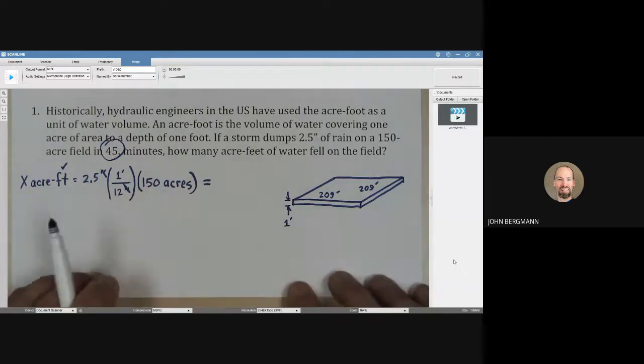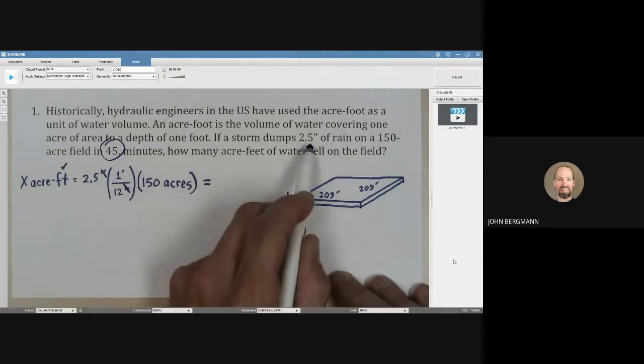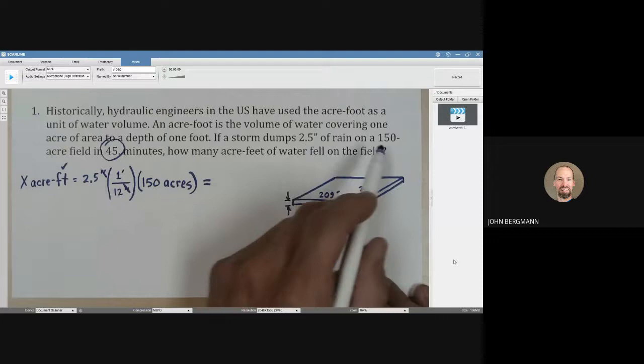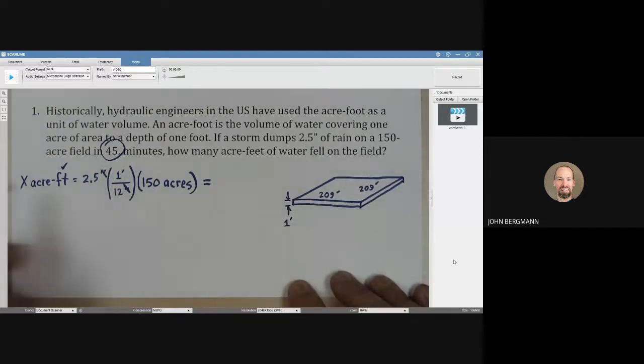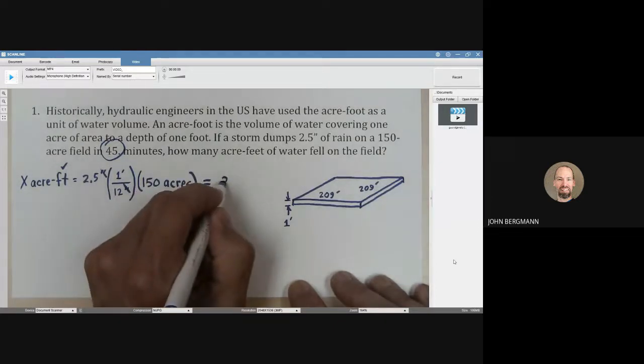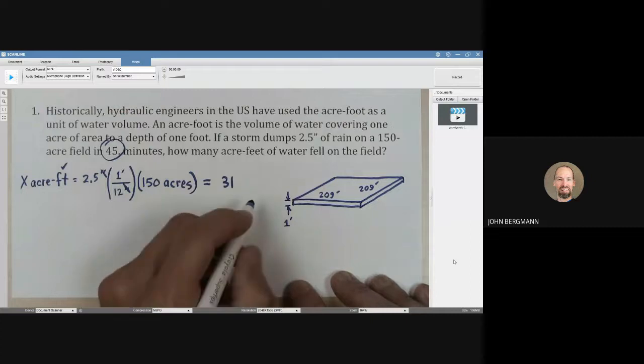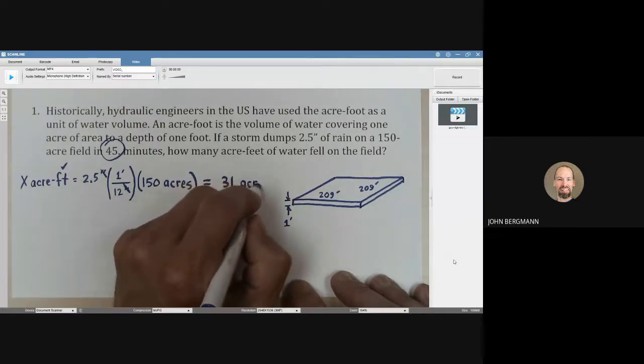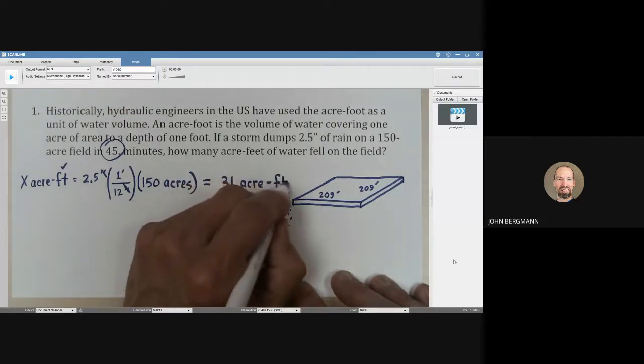We just want to know how many acre feet of water. So we're going to go 2.5 divided by 12 times 150. And let's do significant figures now. This two and a half has two significant figures. The 150 has two significant figures. Who cares about the 45? Because we didn't use that. So we want to round our answer to two significant figures. What I got was 31 acre feet.